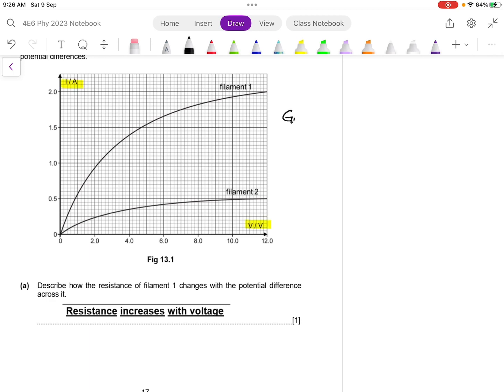So because of that, your gradient is actually given by the change in I. That means I2 minus I1 over the change in V, which is V2 minus V1. So because of that, and if you compare it with the resistance formula, which is V over I,